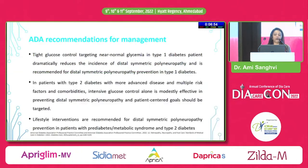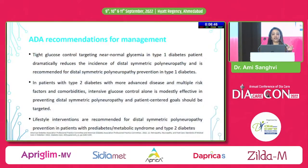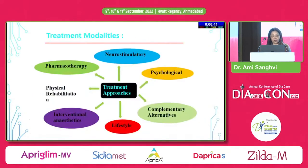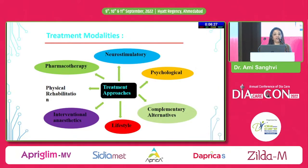Coming to management — the most important part. According to the ADA, strict glycemic control in both type 1 and type 2 diabetic patients with lifestyle modification is a mainstay of treatment. Other approaches include neurostimulatory, psychological, complementary and alternative methods, lifestyle changes, interventional anesthetics, physical rehabilitation, and pharmacotherapy for neurological pain.